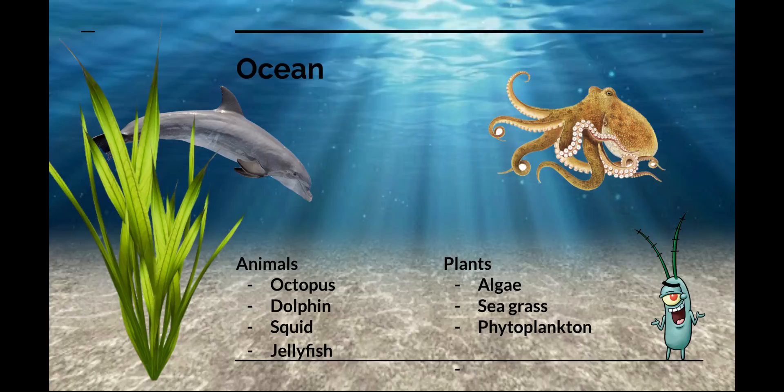Now we'll be talking about oceans. Oceans are as deep as they are wide. On average, an ocean is a little over two miles deep, and more than 70% of Earth is covered in oceans. Scientists estimate that about one million species of animals live in the ocean, but most of them are invertebrates, which are animals without backbones, such as jellyfish.